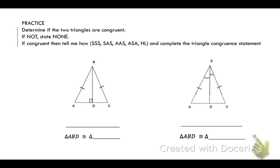In my first set of triangles, I can see that one of the triangles is a right triangle, and since they both share side BD, I know that the other triangle must be a right triangle as well. They have given us that the hypotenuse of each triangle is congruent, and I know that I can prove BD is congruent to itself, which is one of the legs. So since I have right triangles, I know the hypotenuses are congruent and one set of legs is congruent — I can prove these triangles congruent using the hypotenuse leg theorem.